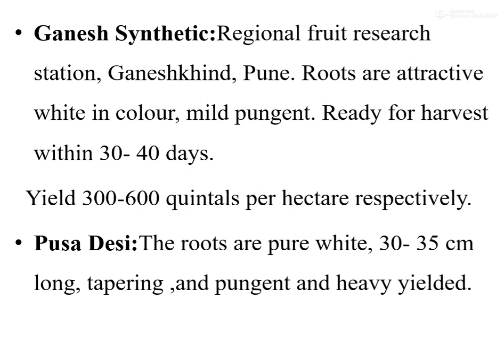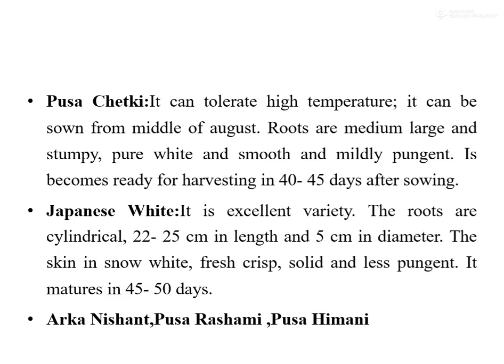The next variety is Pusa Deshi. Its roots are pure white, 30 to 35 cm long, tapering and pungent, and it is high yielding. The next variety is Pusa Ketki, which can tolerate high temperature. It can be sown from mid-August. The roots are medium to large, stumpy, pure white, smooth, and mildly pungent, becoming ready for harvest within 40 to 45 days after sowing.